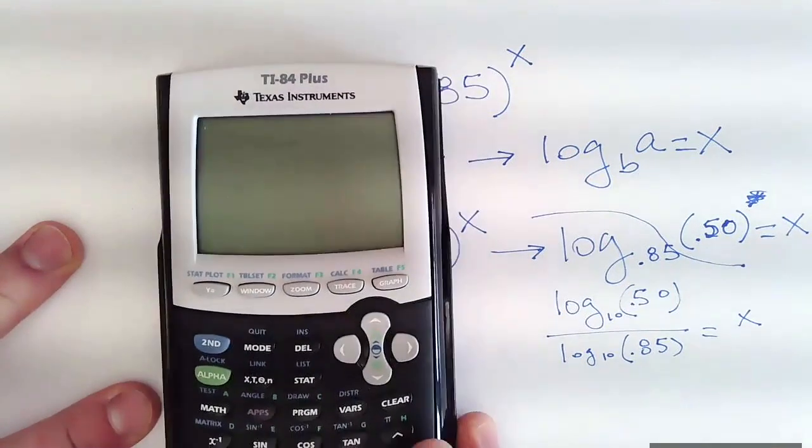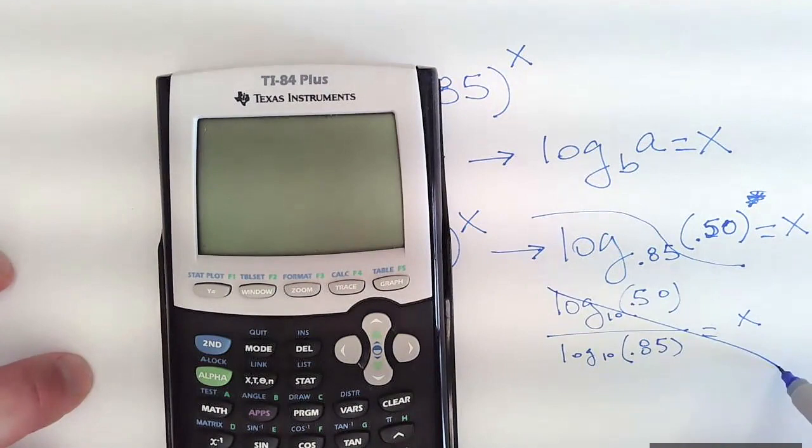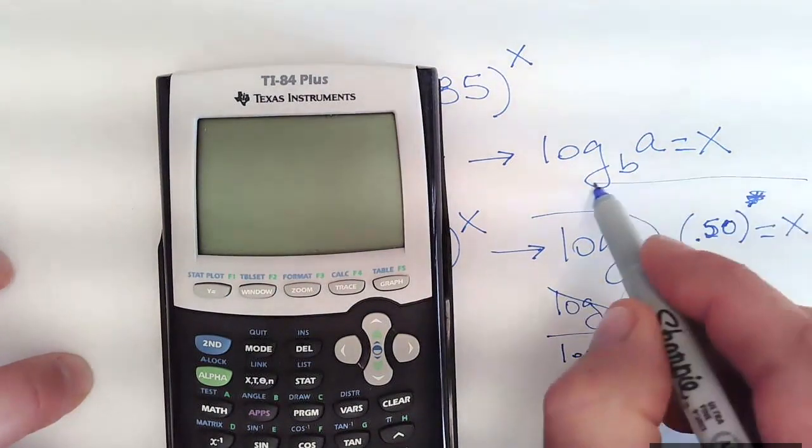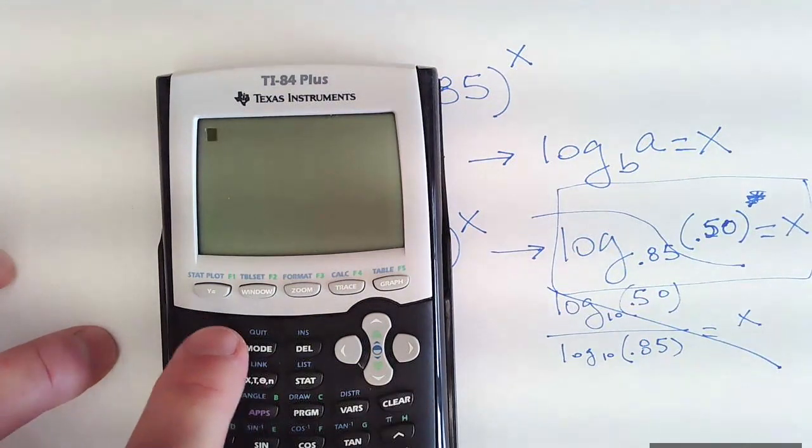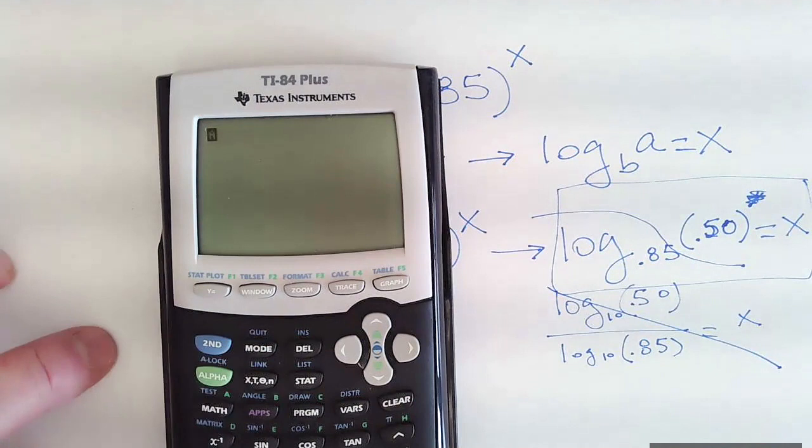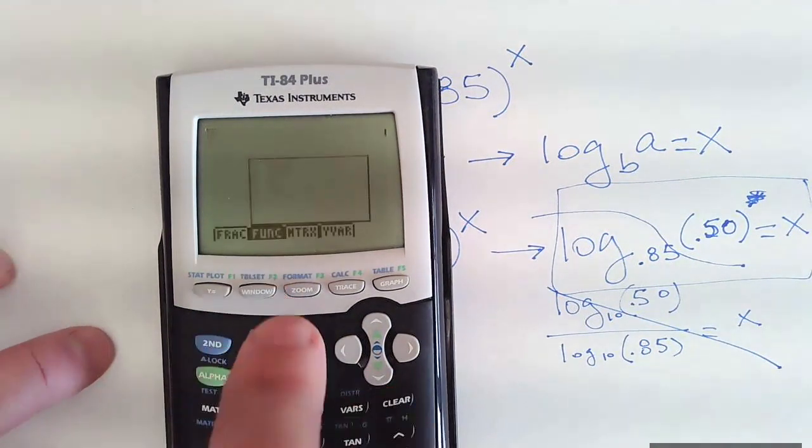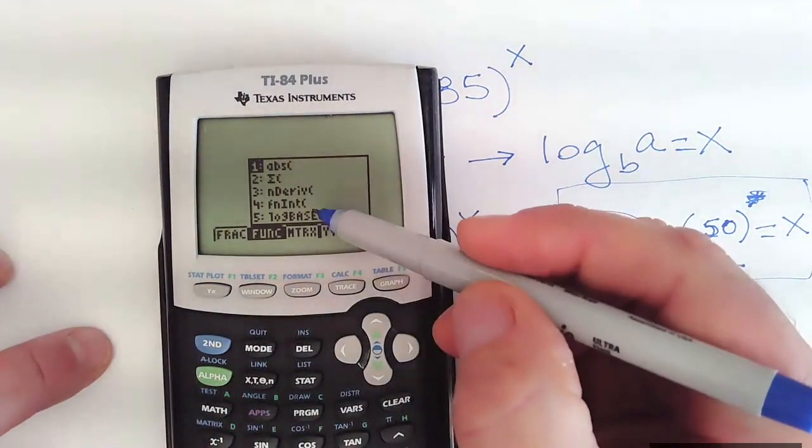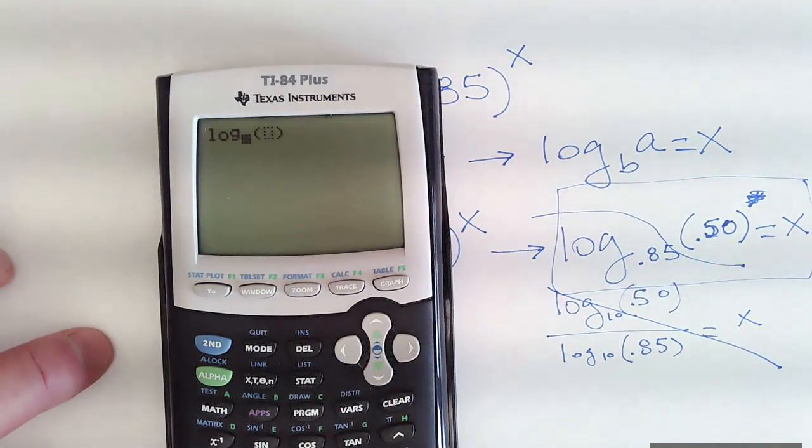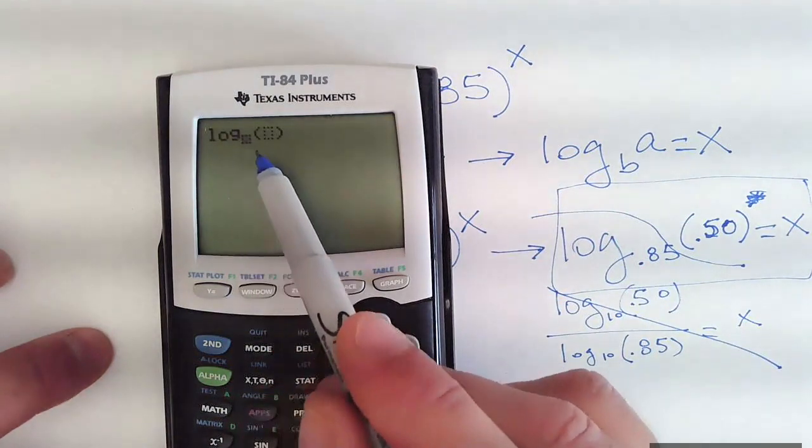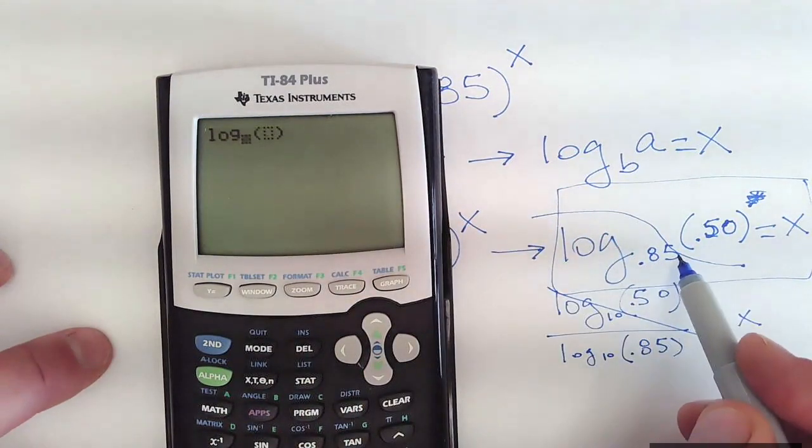So, the steps to get to the function allows you to change the base. You don't want to use the change of base rule. I want to just work here. So use the alpha key, which is the green one, and then go to function 2, which is the window key, and then scroll down to use option 5, or just click on 5. That gives you to this, the base, where you can input the base. Base is 85 hundredths.